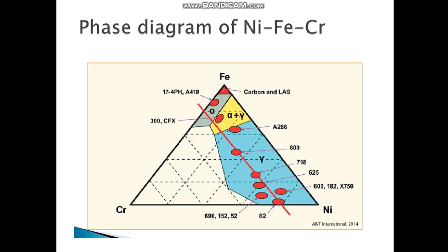Here is the ternary phase diagram of nickel, iron, and chromium — specifically an isopleths or vertical cross-section of the ternary Ni-Fe-Cr phase diagram. You will see the blue region where the popularly and commercially available grades are accommodated, and the structure in that region is the gamma austenite structure.